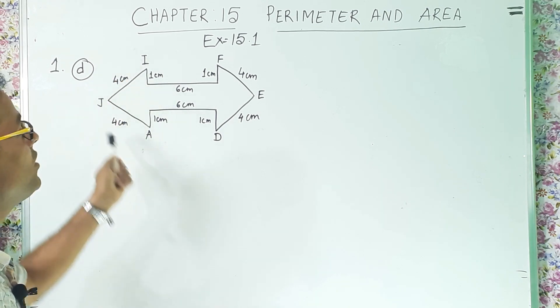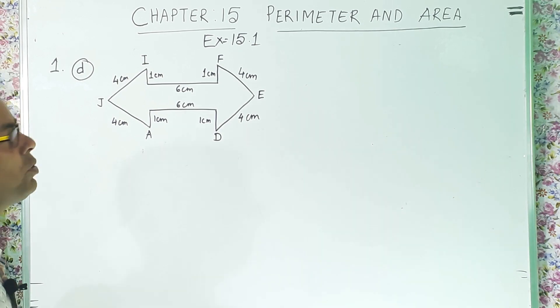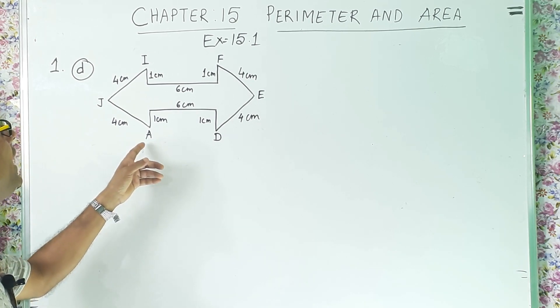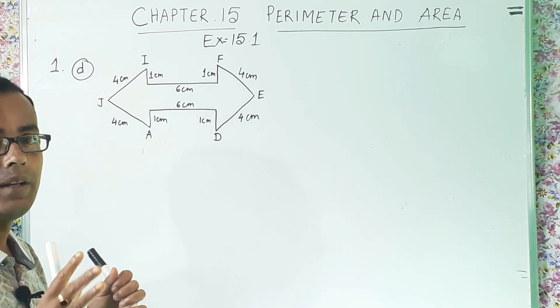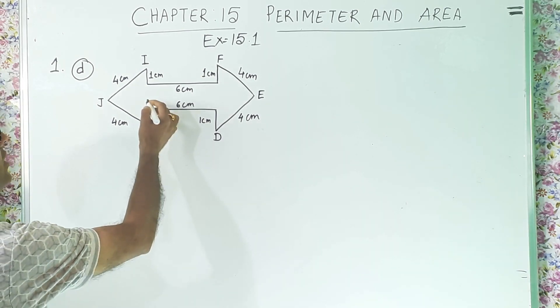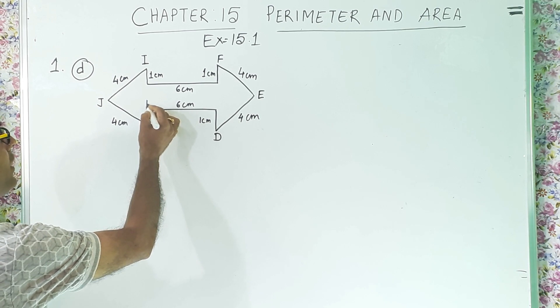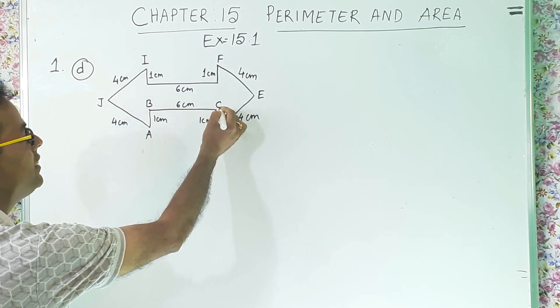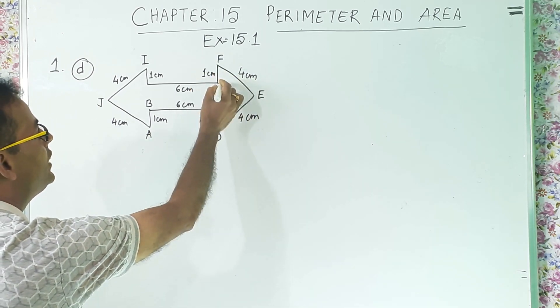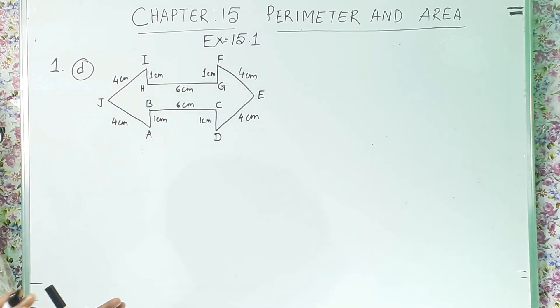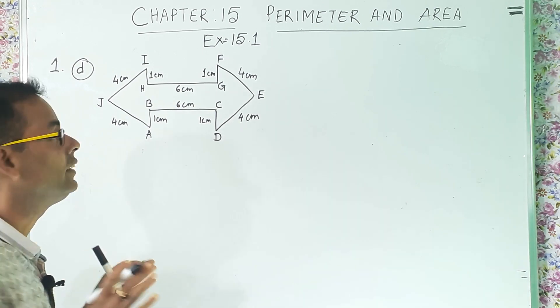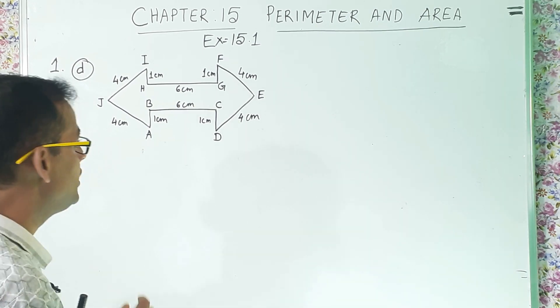So, this is the figure. Now, if you see nicely in this figure, then you can notice here the figure has been named A, D, E, F, I, J. But all the names are not given. Like, if this is A, then this one will be this point, the name is not given. So, we will write B. Then here C, then D, then E, then F, then G, then H, and then I, then J. Now, the diagram is complete.